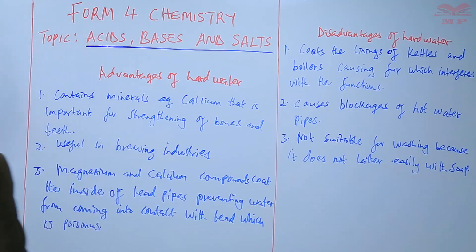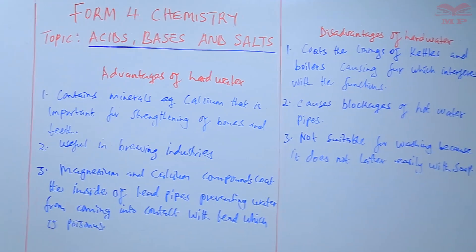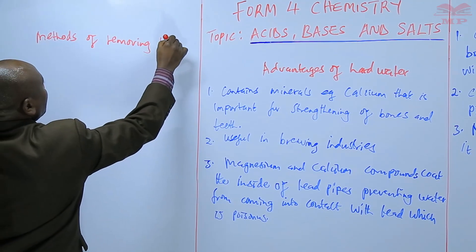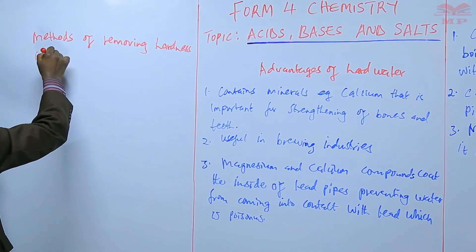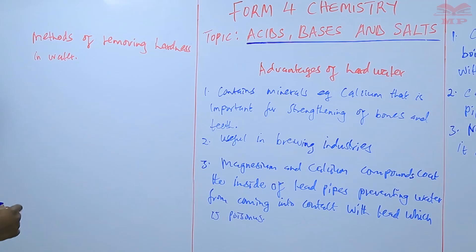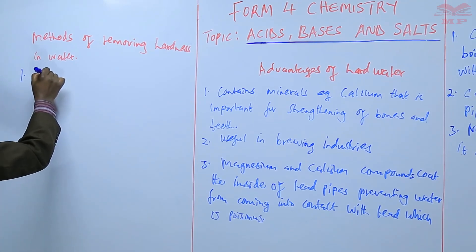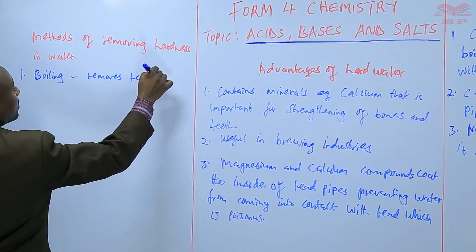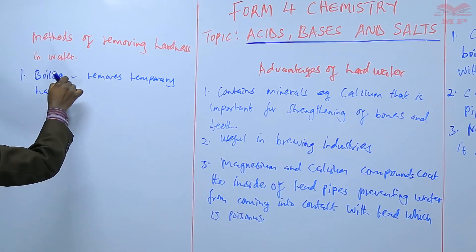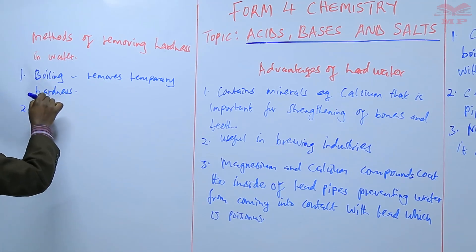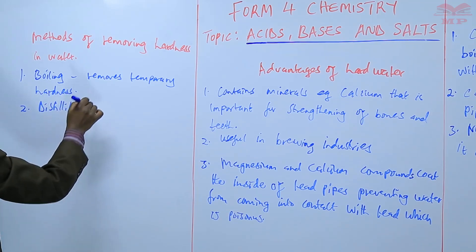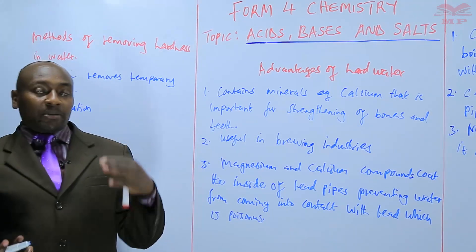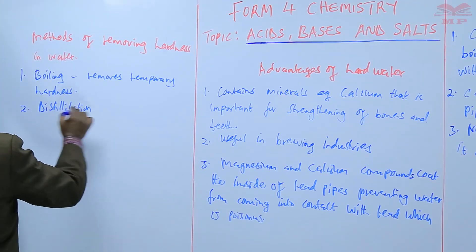The next thing we are going to look at is the other methods of removing hardness in water. We have already mentioned boiling, which removes temporary hardness. We also have distillation, which is basically obtaining the solvent from the hard water — you heat the water and collect the vapor. That is distillation, though it is very expensive.